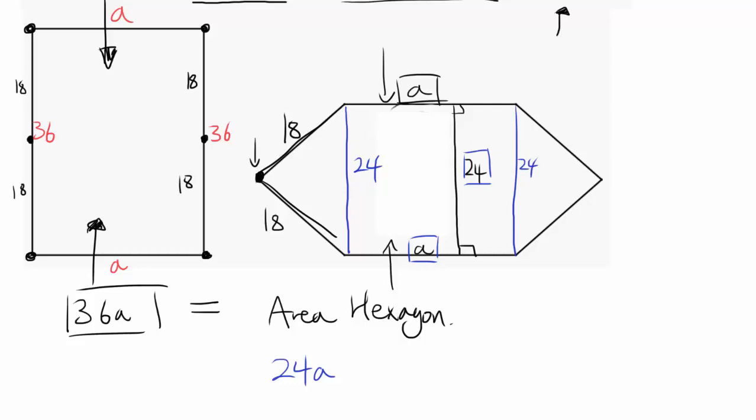And easiest way, because you have isosceles triangle going on, is to draw a perpendicular from the vertex to the opposite side. And now that's going to divide it into two equal pieces, 12 and 12.